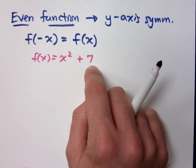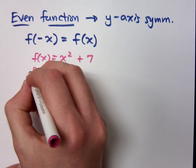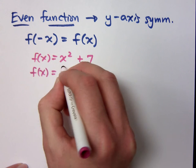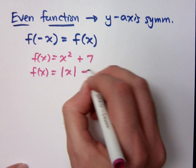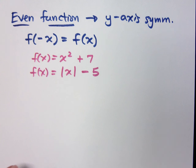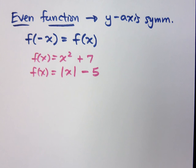There are things that don't have an even degree that are still even. The absolute value of x minus 5 is that v-shape shifted down 5. It still exhibits y-axis symmetry. So those are examples of even functions.